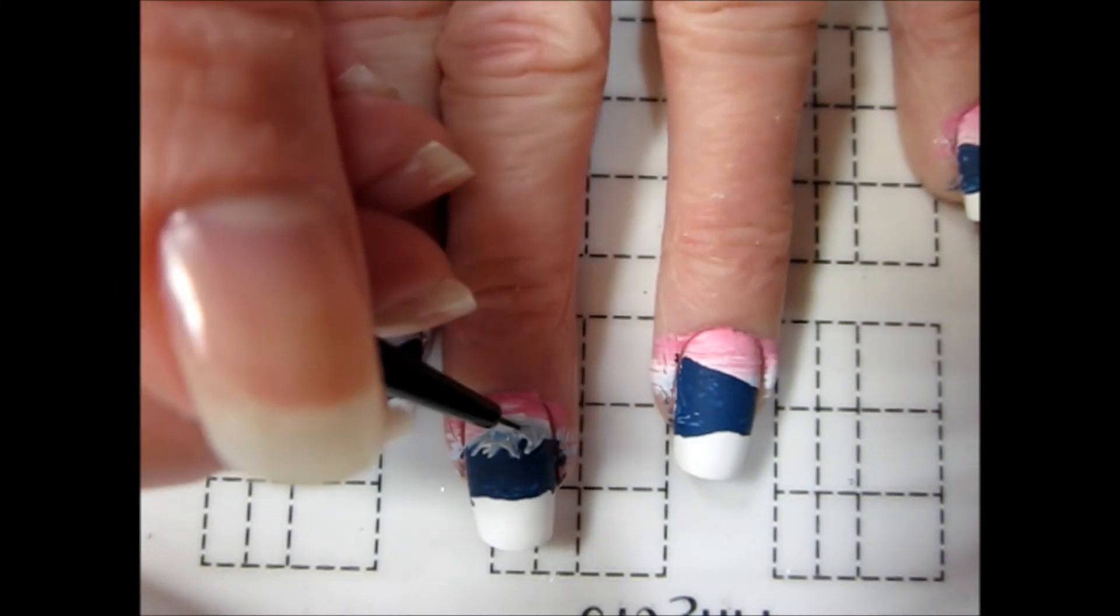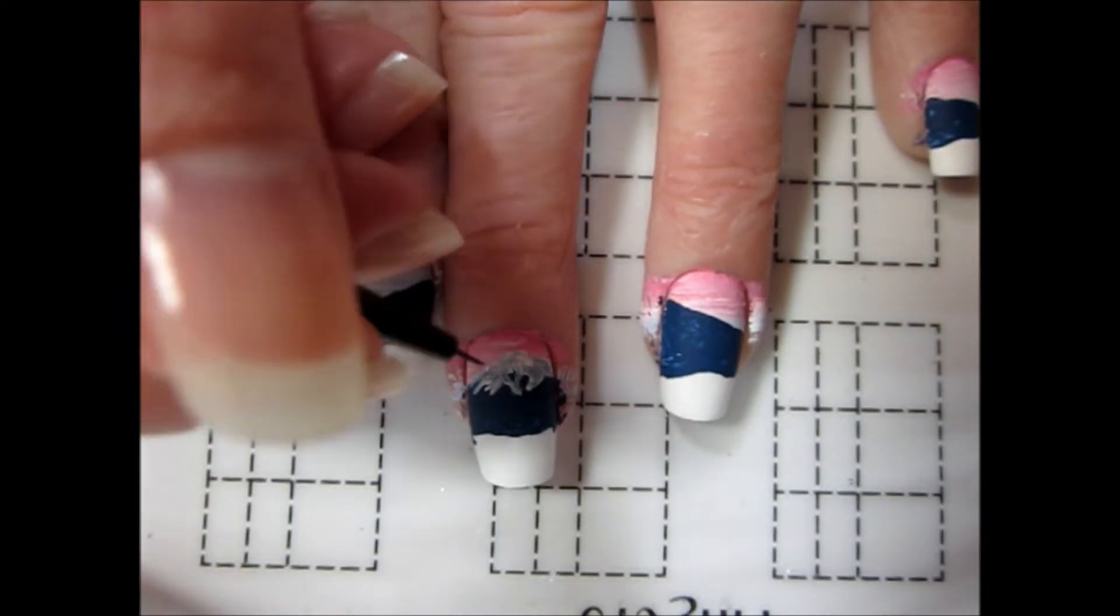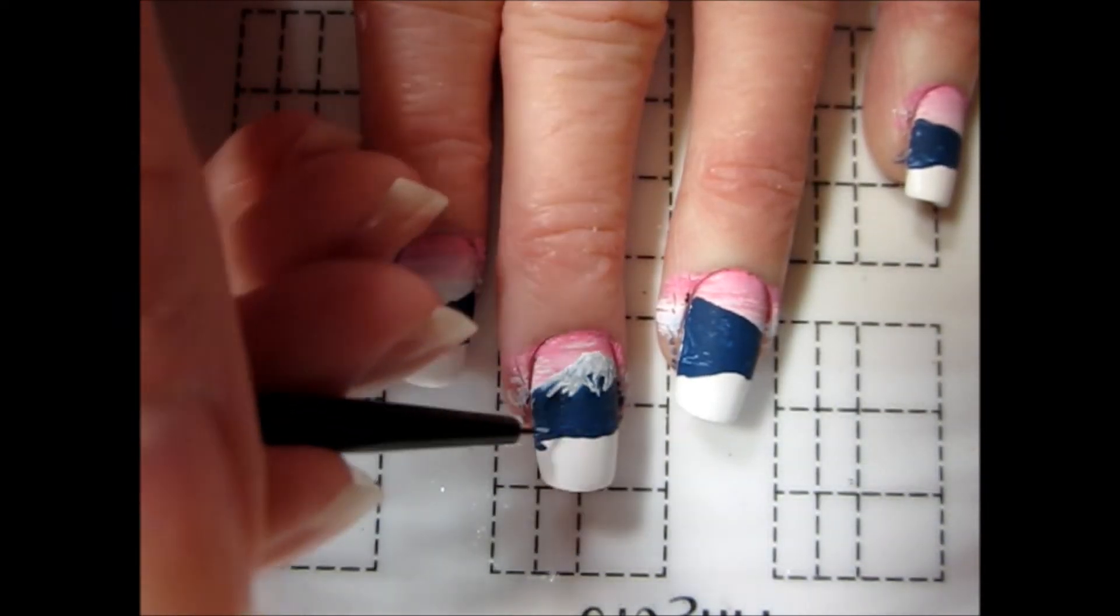But once the white was dry, I went back in and added some shadowing with two shades of grey and a bit of light blue. I then moved on to adding shadows to the mountain.